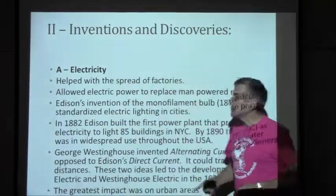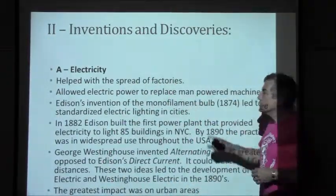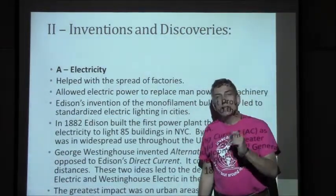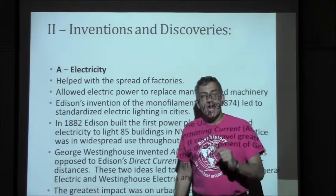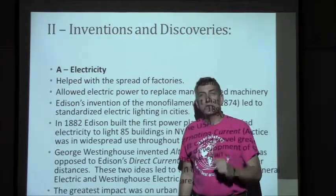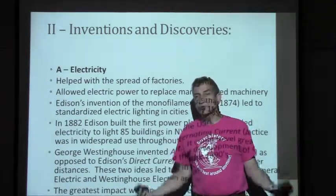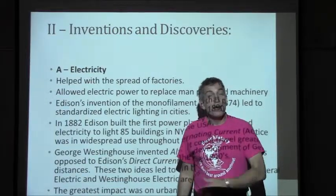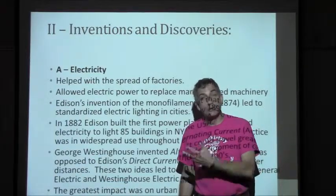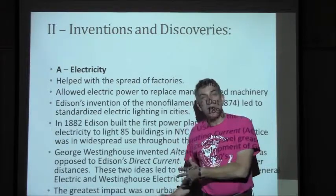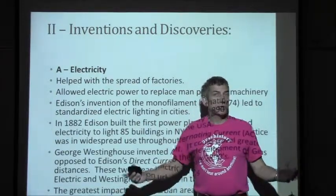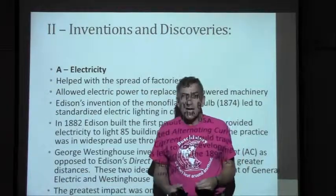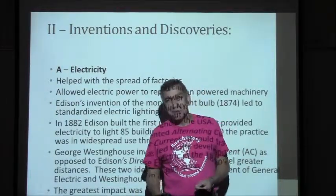We have electricity, which helped with the spread of factories. It allowed electric power to replace manpower and machinery, and it also changed the timing in factories. With electricity, you could work those factories longer. With the advent of the light bulb, people are going to be working at night as well as daytime. Prior to the light bulb, people only worked as long as it was daylight — but once we have the light bulb, it's going to allow people to work 24 hours a day, which certainly is not going to be good for the workers.